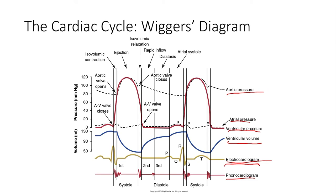Electrical events dictate mechanical events — they precede them. The P wave corresponds to atrial contraction, the QRS complex corresponds to ventricular contraction, and the T wave represents repolarization. That's the key ECG knowledge for this section; we'll cover ECGs in more detail later. Before atrial depolarization, we can look at the ventricular volume curve: as the atria contract, we see a small uptick in ventricular volume — that's the atrial kick.